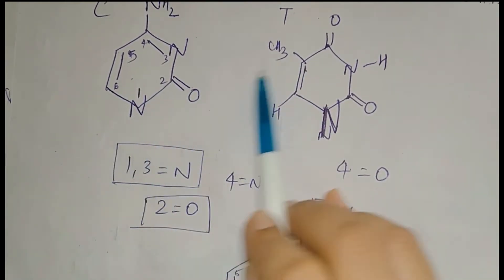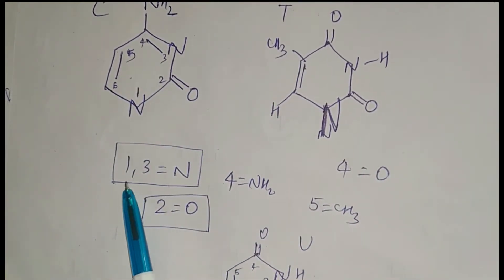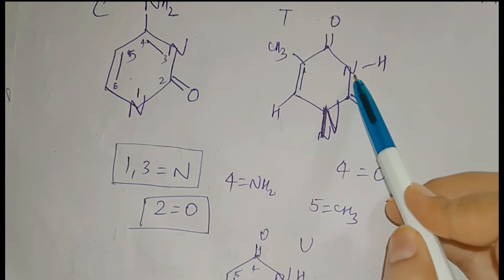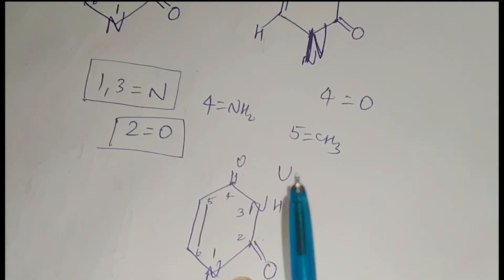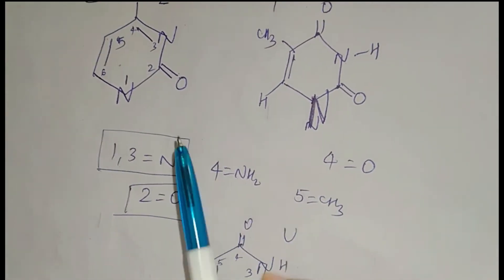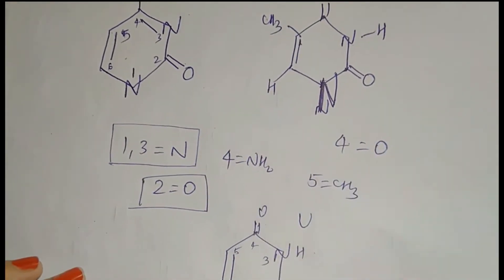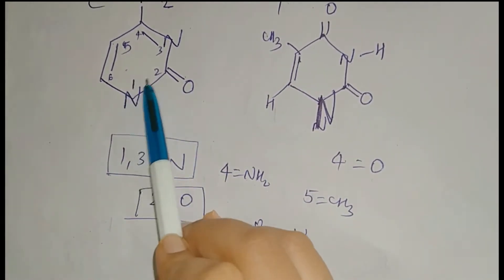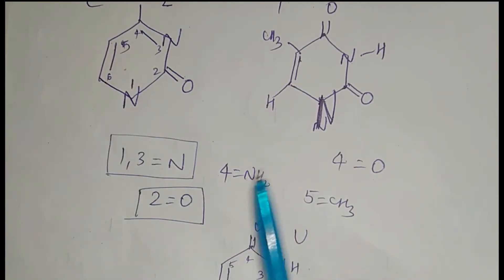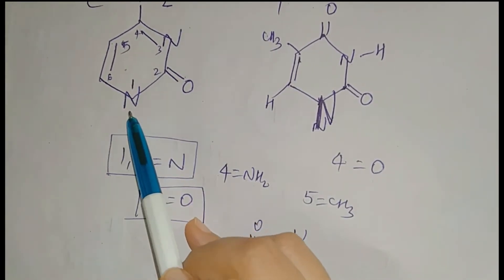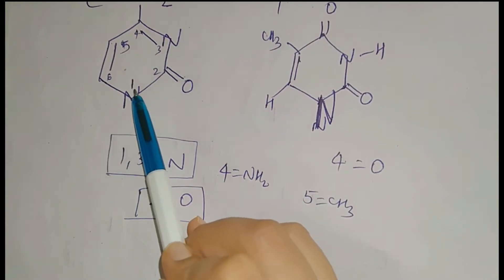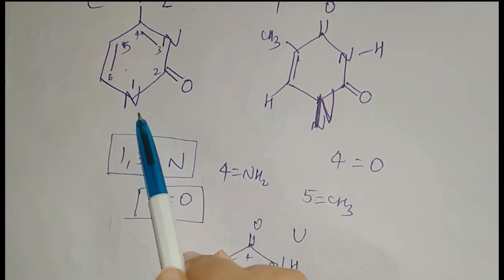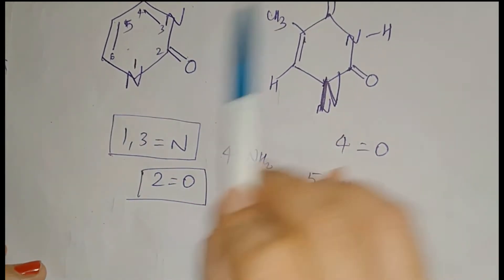In all three pyrimidines, similar to purines, at the 1st and 3rd positions nitrogen is present instead of carbon. So 1 and 3 are nitrogen in cytosine, uracil, and thymine. The second thing to remember: in all three cases, at the 2nd position, oxygen is present. Also, the process of numbering atoms in pyrimidines is different from purines — the first number is given to the base nitrogen and followed in an anti-clockwise direction: 1, 2, 3, 4, 5, 6.